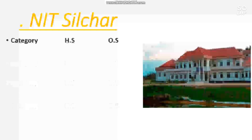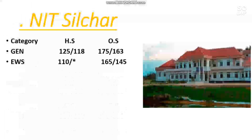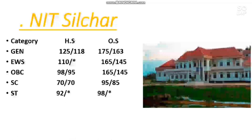The next is NIT Silchar. Here is the cutoff — marks required. For general other state male, 175 marks are needed; for EWS, 165; for OBC, 165; for SC, 95; and for ST, 98. You can check the home state cutoff side-wise and the other state female cutoff also after the slash of the other state data.